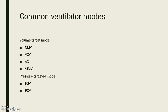Continuous mandatory ventilation, or CMV, is one of the standard modes of ventilation. During pressure-controlled ventilation, two pressure levels are maintained: the lower level of PEEP and the upper pressure level. The resulting tidal volume and decelerating flow are variable and depend on changes in lung mechanics. In pressure-controlled ventilation (PCV), the ventilator determines inspiratory time without the patient's participation.